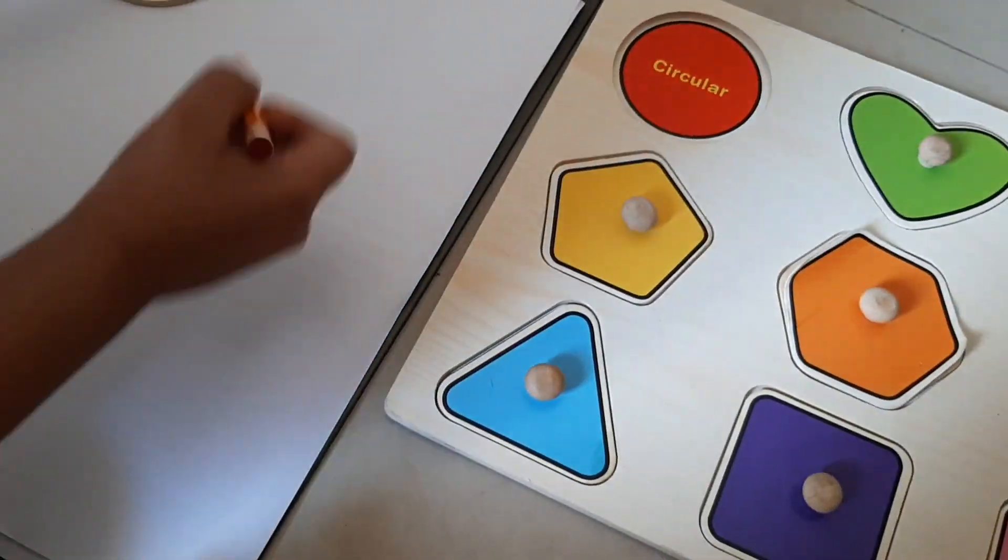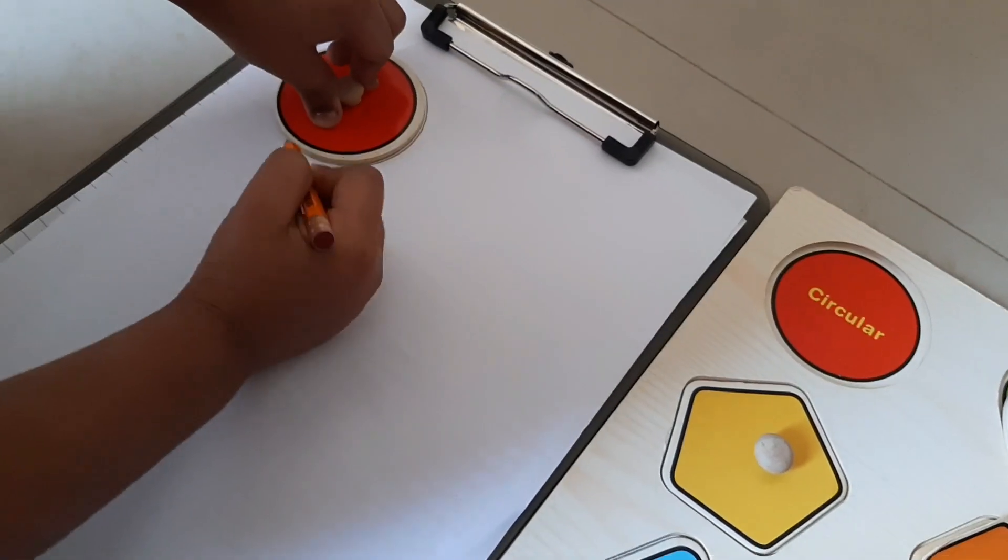Number one: sort the shapes. According to the shapes and colors, the kid can place them over the correct shape.